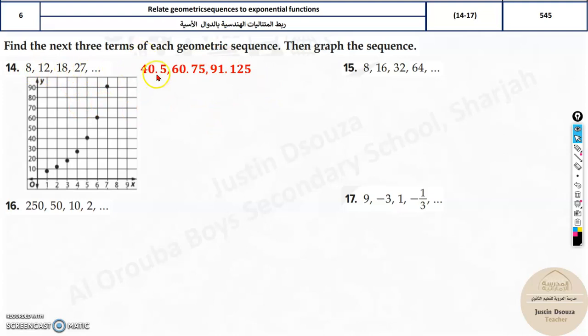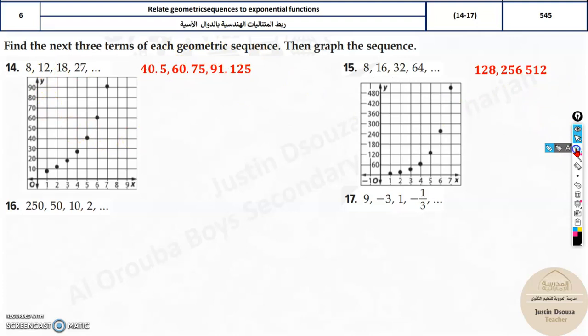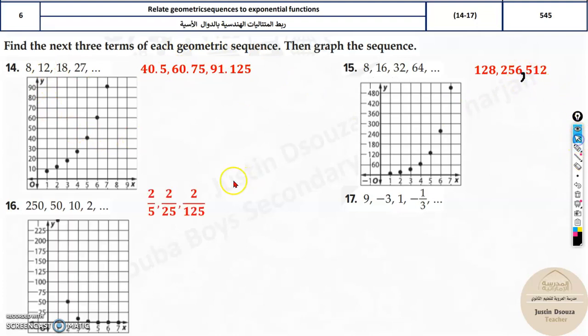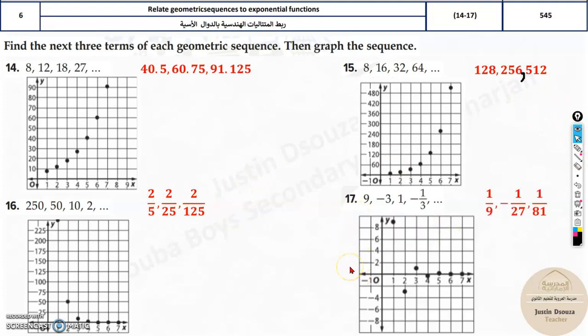Okay. So we have 1, 2, 3, 4, 5, 6, 7 terms. Similarly, find all the other terms. I'm sorry, there's a comma missing over here. 256, 512. You can do it by yourself. And then graph it. And then check the answer.